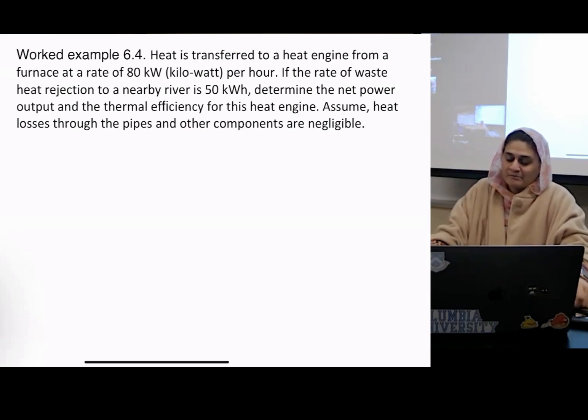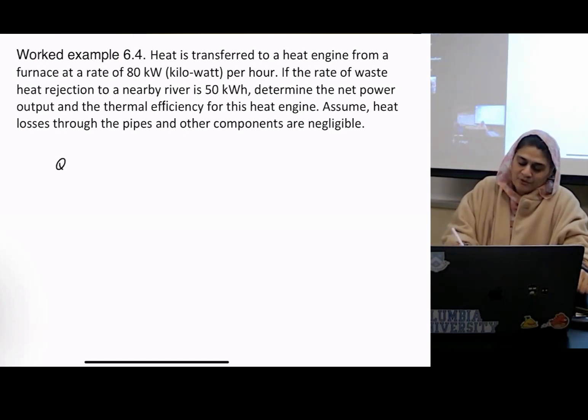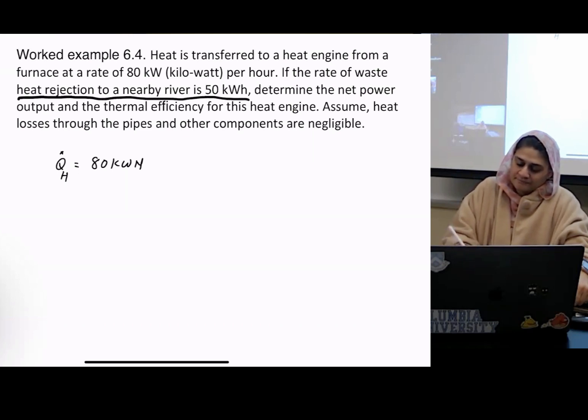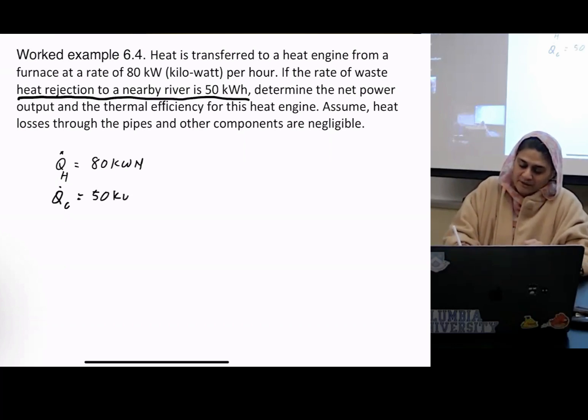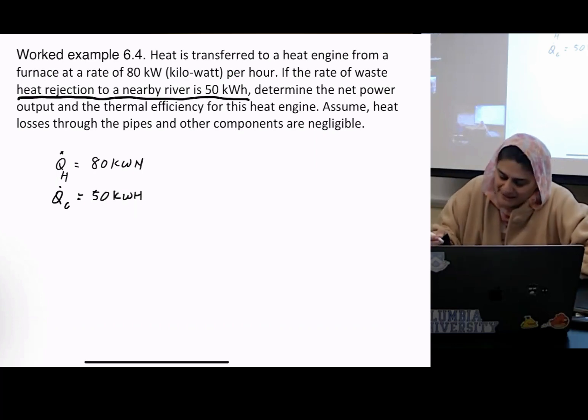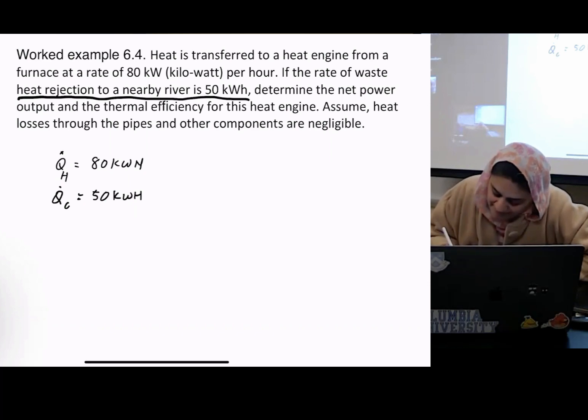Okay, how do we do this? Look at the units. It's a rate, correct? So Q is 80 kilowatt hour. Oh, QH is 80, right? And heat rejection will be QC, and that is 50 kilowatt hour. And it's asking us for thermal efficiency and the net power output.